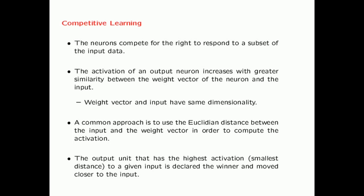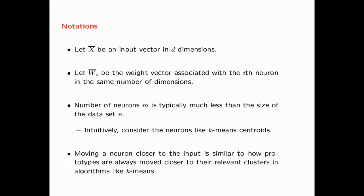The output unit that has the highest activation or the smallest distance to a given input is declared as a winner, and it is moved closer to the input. Here we assume that X-bar is an input vector in D dimensions, and W_i is the weight vector associated with the i-th neuron in the same number of dimensions. The weight vectors of neurons and the input points all have the same dimensionality D.